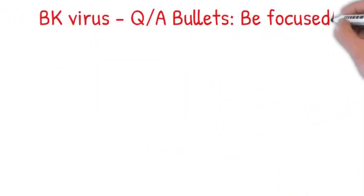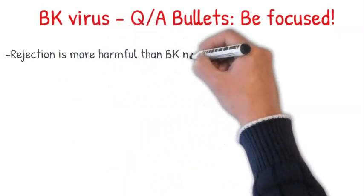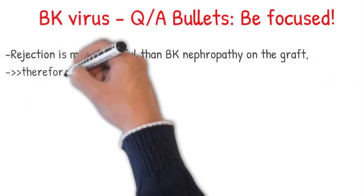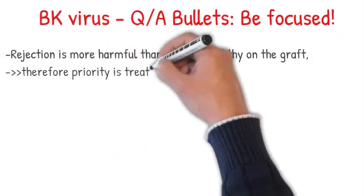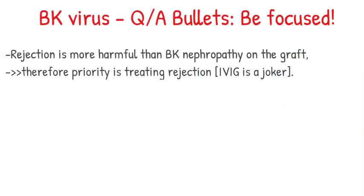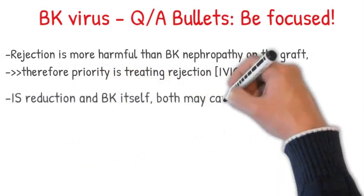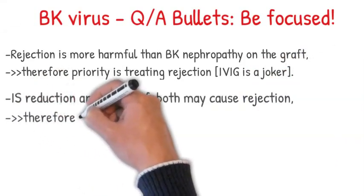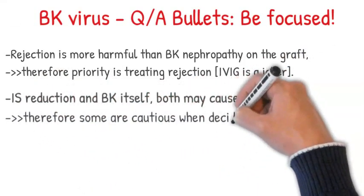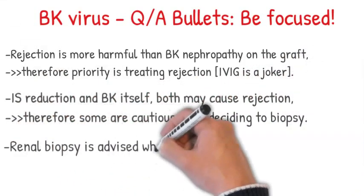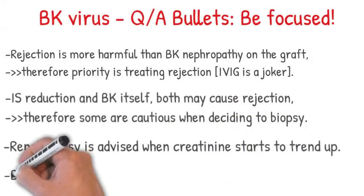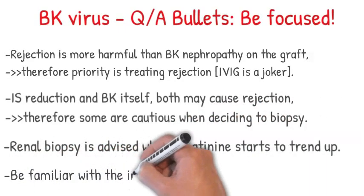A few more bullets: rejection is more harmful than BK nephropathy on the graft; therefore, priority is treating rejection. By the way, IVIG is a joker here — you might also give pulse corticosteroids to reduce inflammation. Immunosuppression reduction and BK itself both may cause rejection; therefore, some are cautious when deciding to biopsy — it's advisable only when creatinine starts to trend up. And lastly, be familiar with the images.